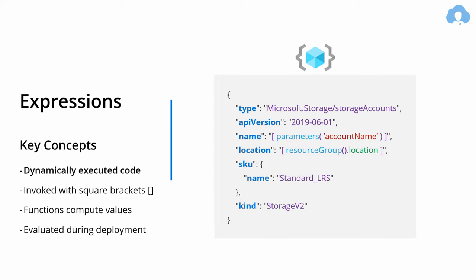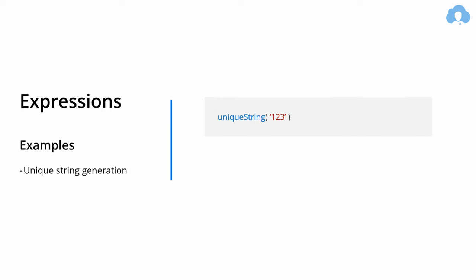There are many things you can parametrize, so let's look at a few examples. If you are deploying services that always require a unique name within a subscription, region, or maybe globally, unique string generation is a really good example. You can use the uniqueString function, pass an input string parameter, and it will generate a random string for you based on that input. Importantly, it will always return the same unique string for the same input value.